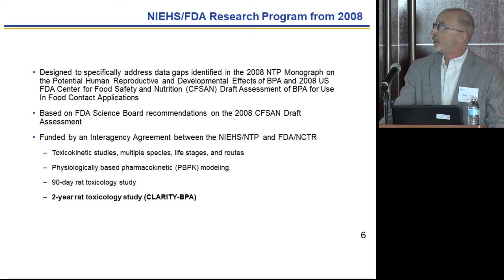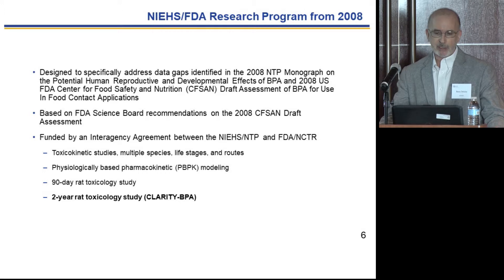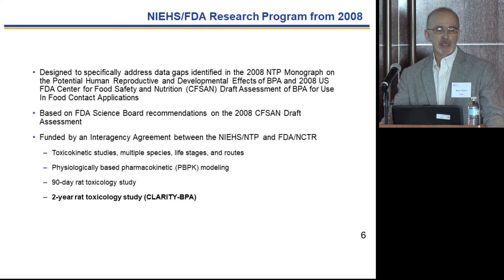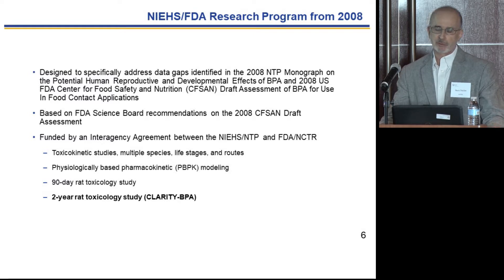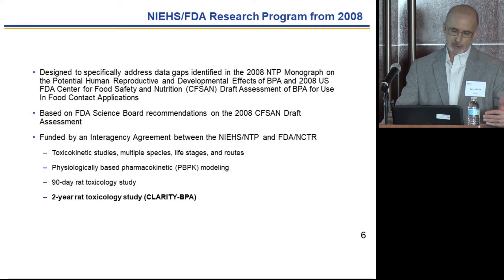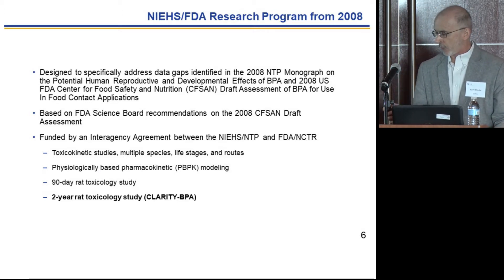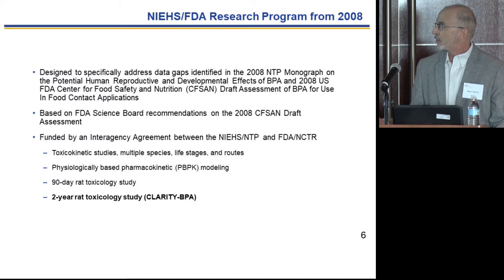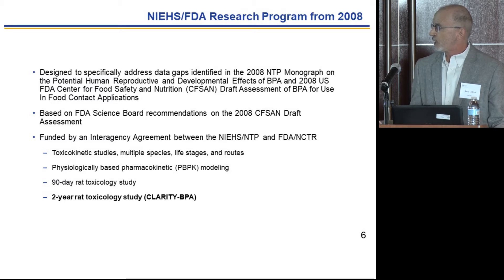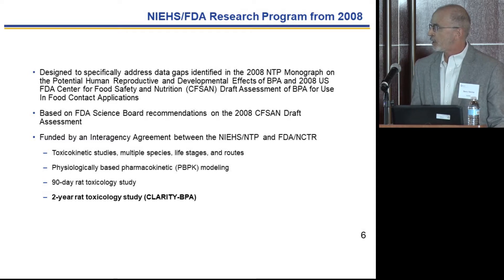NIH and FDA initiated a research program around 2008, designed specifically to address gaps identified in the NTP monograph that came out that year and the FDA assessment of BPA for use in food contact applications, which was reviewed by the FDA Science Board. The research program included a series of toxicokinetic studies in multiple species, life stages, and routes, put into physiologically-based pharmacokinetic modeling — all of which have been published. We also did a 90-day rat toxicology study, and the study I'm discussing today is a two-year rat toxicology study.